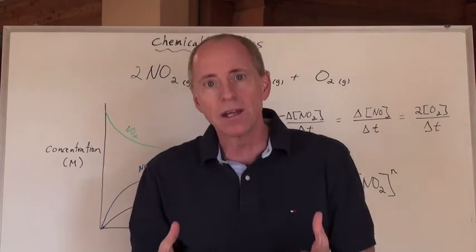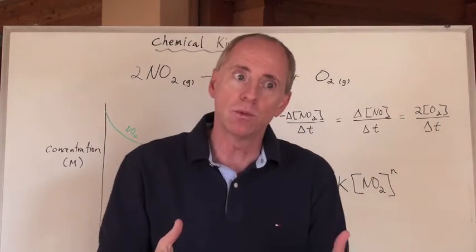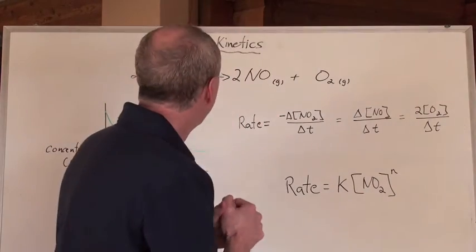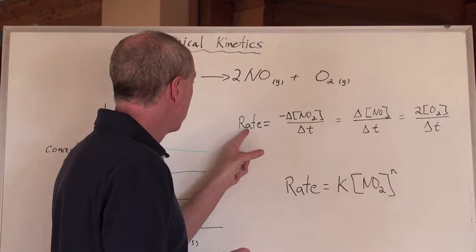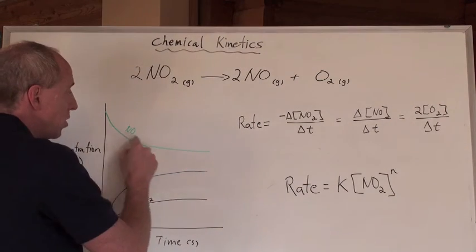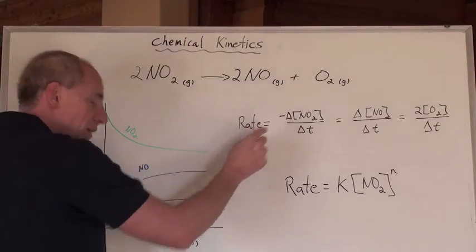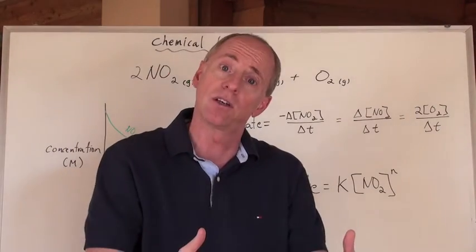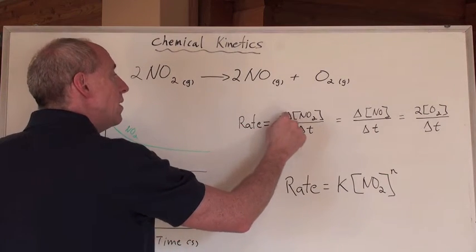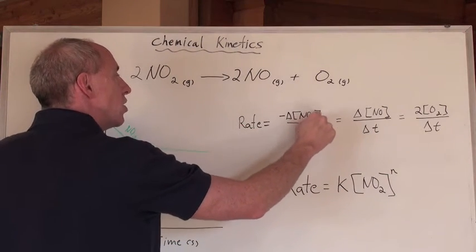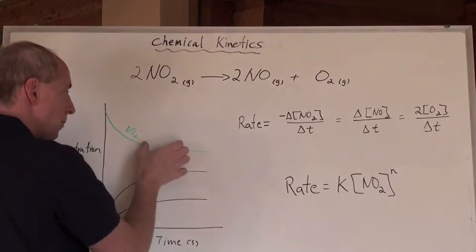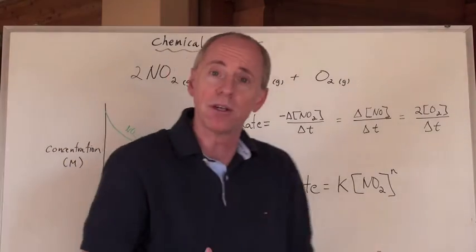So how could we measure the rate of this reaction? Well, we could do it one of three ways, really, in terms of concentration and time. We could say, the rate of this reaction is equal to the change in the concentration of the NO2, and we put a negative in front because it's decreasing in concentration. So the rate of this reaction could equal the decrease in the change in concentration of the NO2 over a change in time, a time period, right?